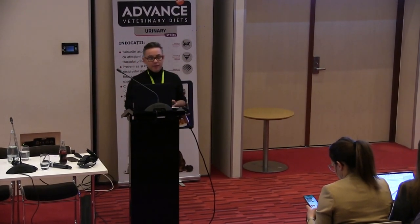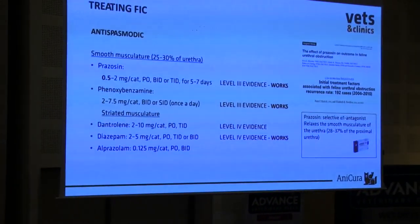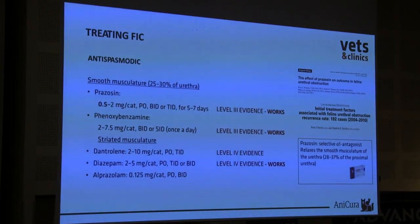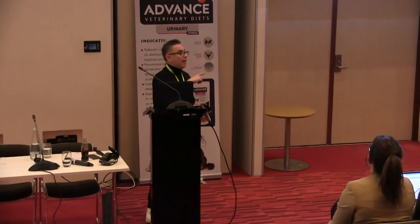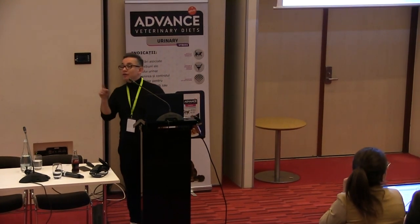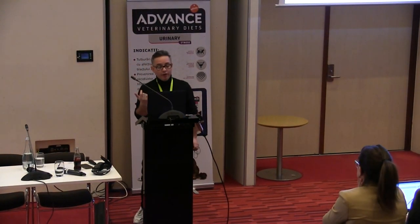Another antispasmodic drug is phenoxybenzamine — it was a very good option but appears to have disappeared in Europe. For urethral muscle relaxation, you can use diazepam, mainly in recurring or chronic cases. However, the oral form of diazepam has been shown to cause hepatic necrosis, so you have to warn the owner about that. Another muscle relaxant antispasmodic is alprazolam — I have no experience with it, but it can be used.